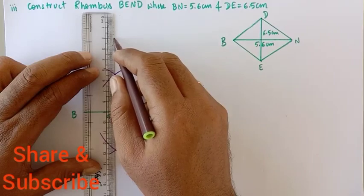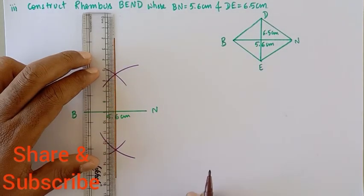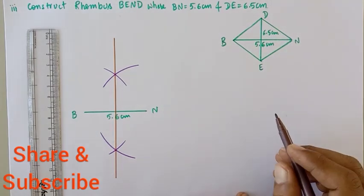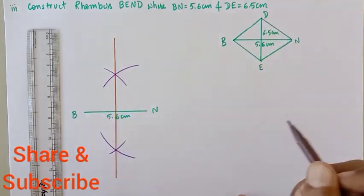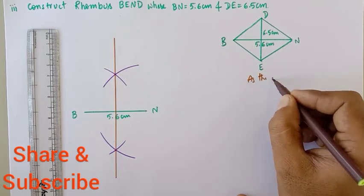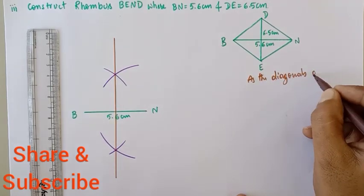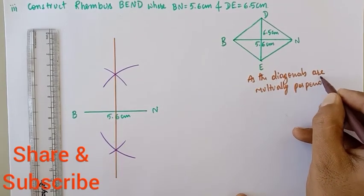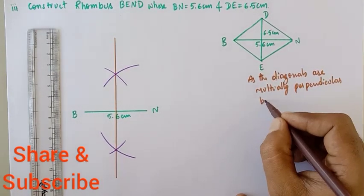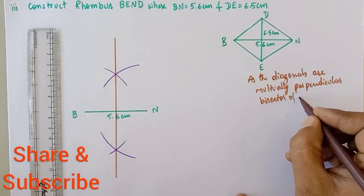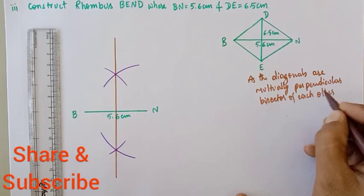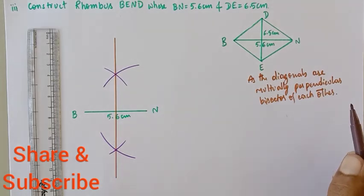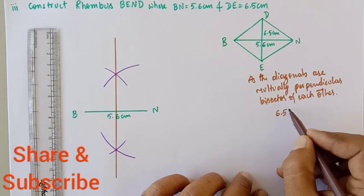This is the perpendicular bisector. Since the diagonals of a rhombus are mutually perpendicular bisectors of each other, I will divide 6.5 by 2 to find how far to mark D and E from the center.